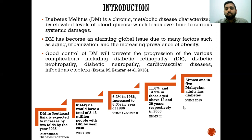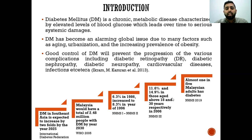Looking at this flowchart, we can see how diabetes has been changing over time. Diabetes in Southeast Asia is expected to increase by two-fold by the year 2025. In Malaysia, by the end of 2030, we will have at least 2.48 million people with diabetes every year, with a non-stop progression of the diabetes population almost every year.